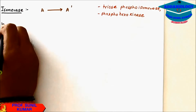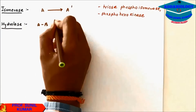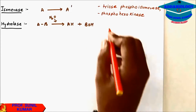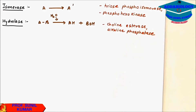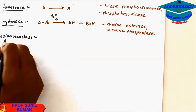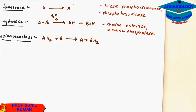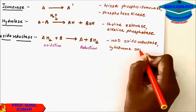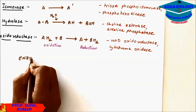Phosphohexoisomerase is another example. Hydrolase, as the name suggests, involves water, where a product is broken down with the help of water. Examples of hydrolase include cholinesterase and alkaline phosphatase. Last is oxidoreductase — responsible for oxidation and reduction. One compound undergoes oxidation, another undergoes reduction. Examples include NAD oxidoreductase and cytochrome oxidase.